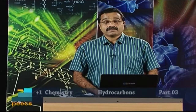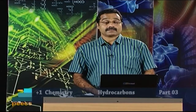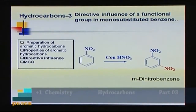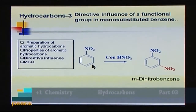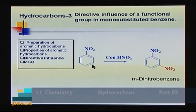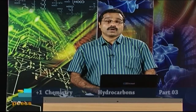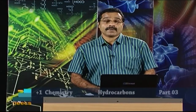When nitrobenzene is nitrated again with concentrated nitric acid and concentrated sulfuric acid, the new nitro group enters at the meta position. So the nitro group already present directs the incoming electrophile to the meta position — this is called the directing influence of mono-substituted benzene. Groups that direct to the ortho and para positions are called ortho-para directing groups, and those that direct to meta position are called meta-directing groups.